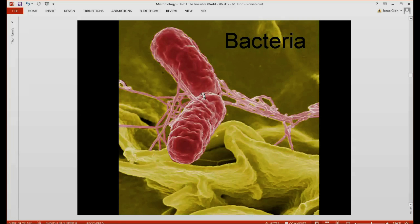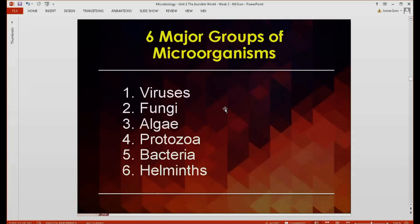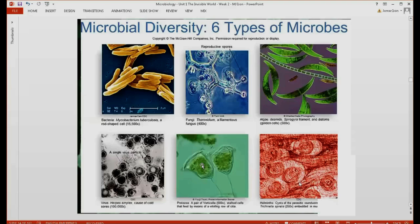Bacteria as well, as you can see here. And finally, helminths, or what we call worms. So these are the six major groups of microorganisms: viruses, fungi, algae, protozoa, bacteria, and helminths. We'll be talking about these different groups individually more deeply in the next coming chapters. Here are other examples and pictures of these six types of microbes or microorganisms.